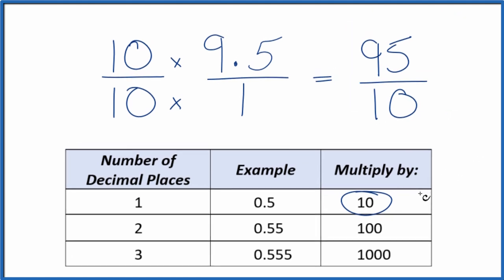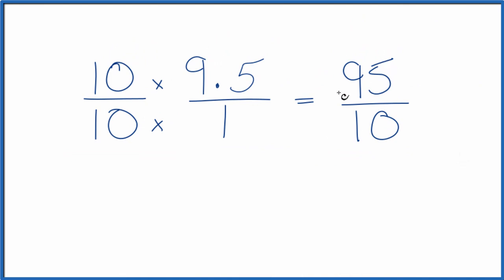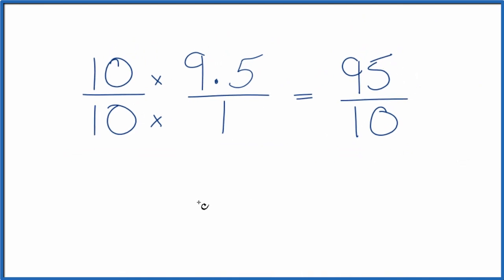But we can simplify this. Let's do that. 5 would go into 95 and 10 evenly. So we could take 95 divided by 5, that's 19. 10 divided by 5, that's 2.